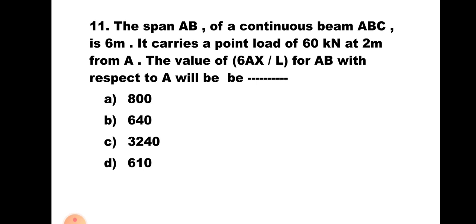Question number 11. The span AB of a continuous beam ABC is 6 meter. It carries a point load of 60 kilonewton at 2 meter from A. The value of 6AX̄/L for AB with respect to A will be: A. 800, B. 640, C. 3240, D. 610. This is the continuation of the previous question — the area was already calculated. Now put 6 × area, calculate X̄, and apply X̄/L. The correct answer is B, 640.